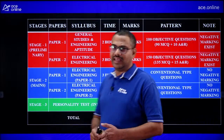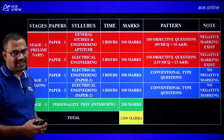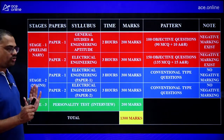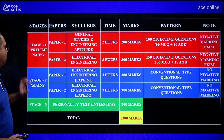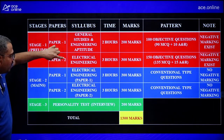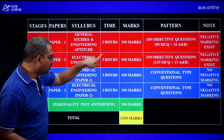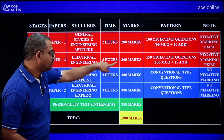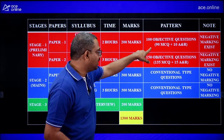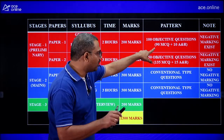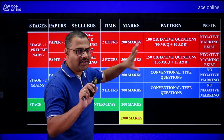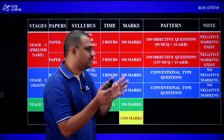The ESE exam structure: Stage 1 Prelims has Paper 1 (General Studies, 2 hours, 200 marks) and Paper 2 (Electrical Engineering, 3 hours, 300 marks). Paper 2 has 100 objective questions — approximately 90 MCQs and 10 Assertion-Reasoning questions. These are approximate figures but give a good estimate of what to expect.